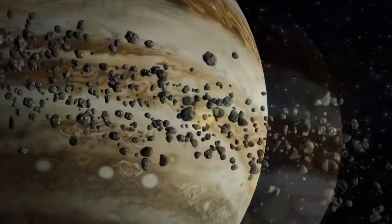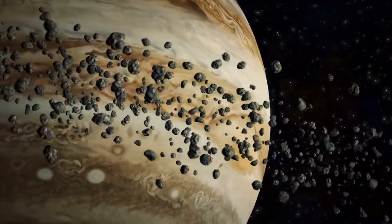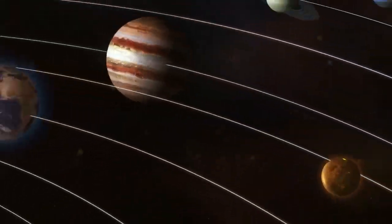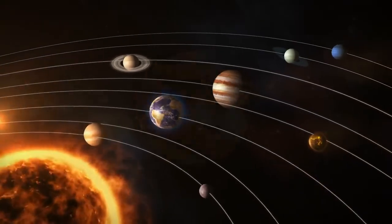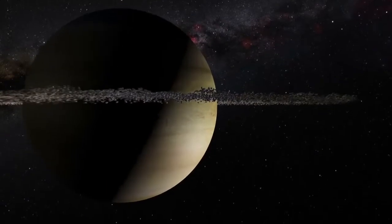Instead what we find is an asteroid debris field, dubbed the asteroid belt. Proof of a destroyed planet is everywhere throughout our solar system, from the scouring of the surfaces of celestial bodies to the rings on planets.